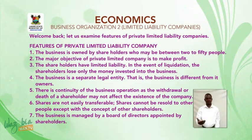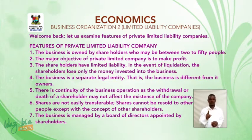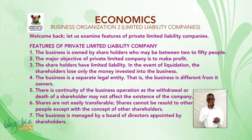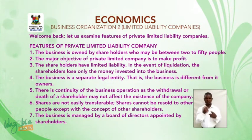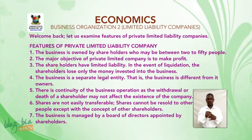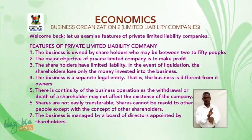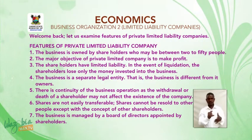Welcome back. Let us examine features of private limited liability companies. 1. The business is owned by shareholders, who may be between 2 to 50 people. 2. The major objective of a private limited company is to make profit. 3. The shareholders have limited liability — in the event of liquidation, the shareholders lose only the money invested into the business. 4. The business is a separate legal entity; that is, the business is different from its owners. 5. There is continuity of the business, as the withdrawal or death of a shareholder may not affect the existence of the company.